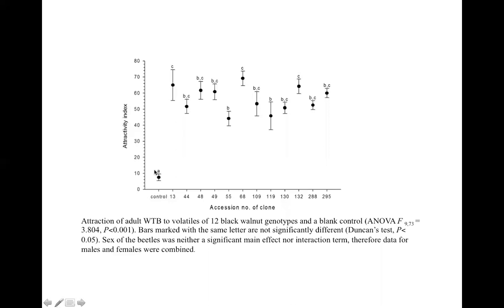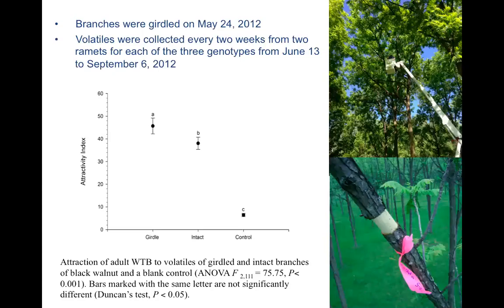The solvent control is methylene chloride, used to elute the compounds from the absorbent material. Interestingly, we found that some genotypes — for example, 13, 68, and 132 — were more attractive than other genotypes, such as 55. So our next step was to take these most attractive genotypes, 68 and 132, and girdle them, then collect the volatiles from girdled and intact branches of the same tree and determine the extent to which girdling increases the attraction of walnut twig beetle.